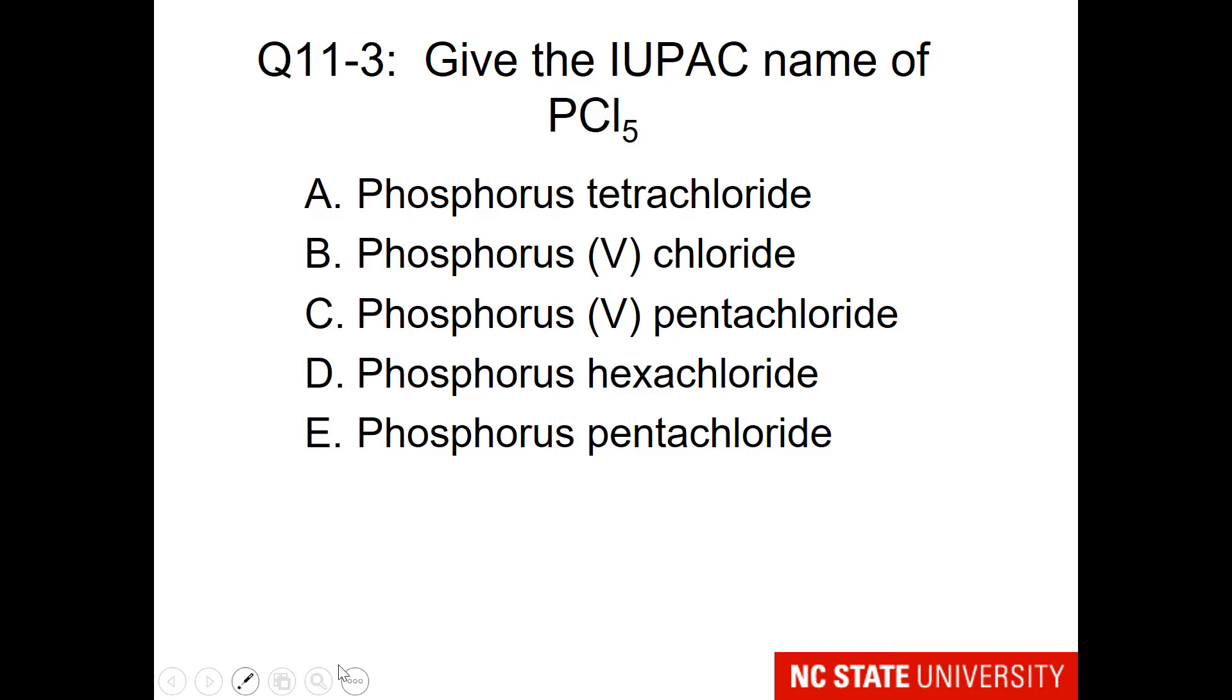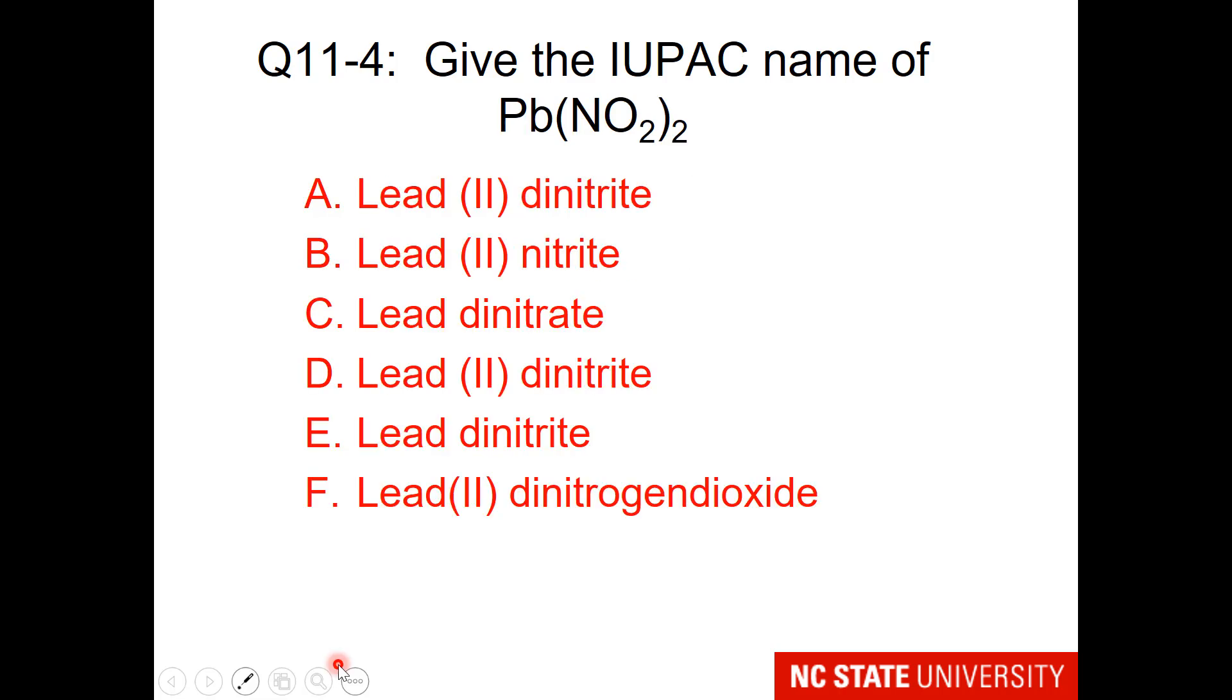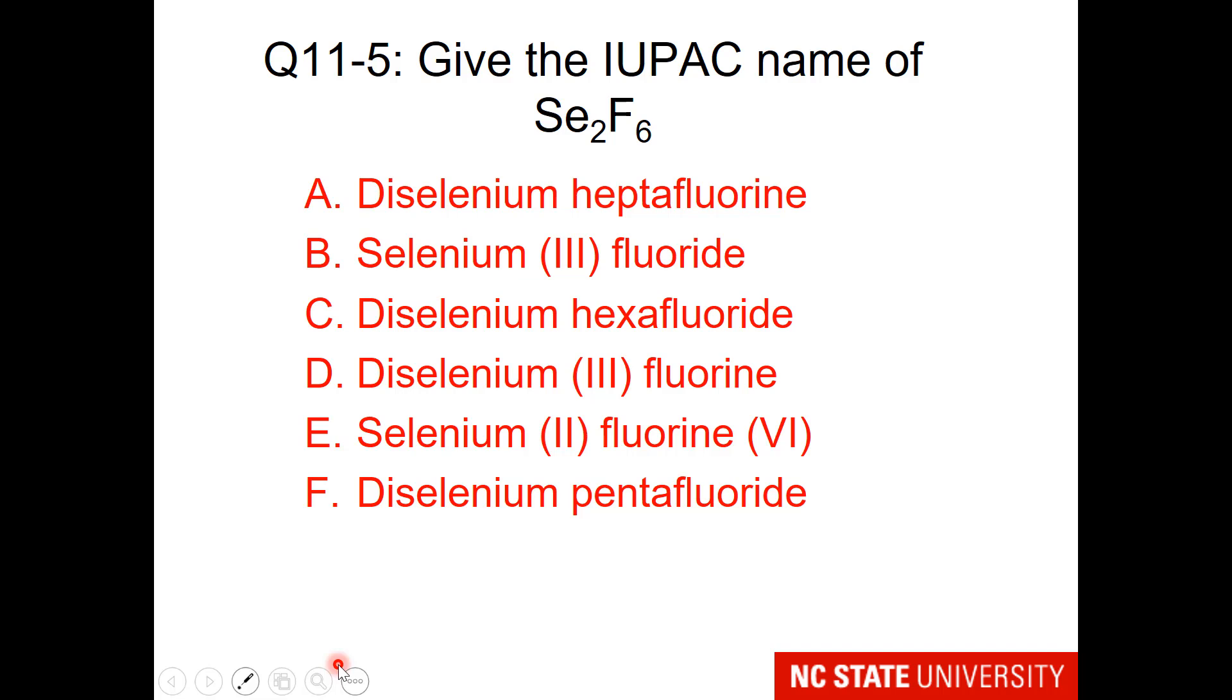So now here come the questions. I've mixed in ionic and molecular compounds and ionic and molecular naming. So please go through the exercise of deciding what type of compound this is, and then choosing the appropriate naming convention. This one asks give the IUPAC name of phosphorus with 5 chlorines. This one would like the name of Pb with parenthesis NO2 and parenthesis 2. How about Se2F6?